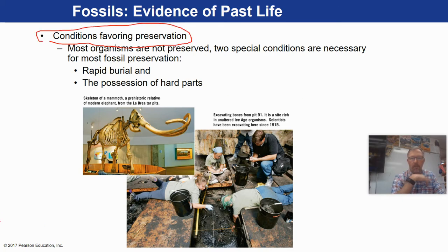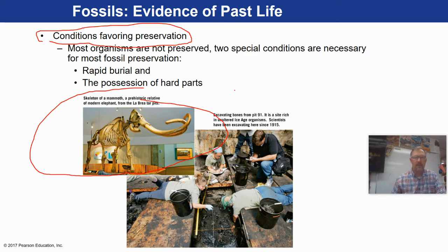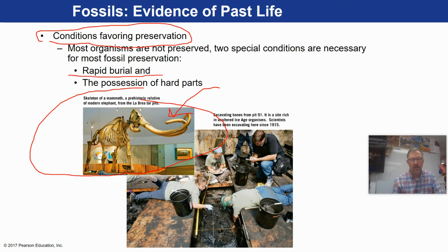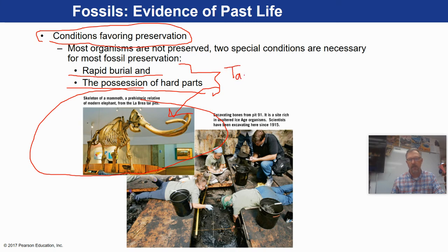Conditions that favor fossil preservation: out in the badlands you very rarely find something that's complete. To get a complete fossil you need something that was buried rapidly and usually has hard parts that can withstand being buried and don't break down over time. There's actually a whole branch of geology that studies this called taphonomy — that's T-A-P-H-O-N-O-M-Y. At MSU we have people who actually do taphonomy studies of fossils in this area, letting dead stuff get buried and studying how it fossilizes over time.